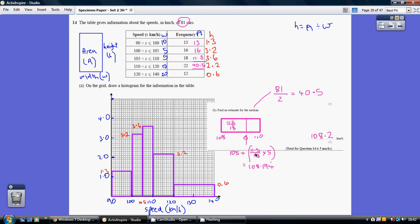Now working that out, 11.5 over 18 times 5, I get 3.194. So that's how much further along I need to go here.